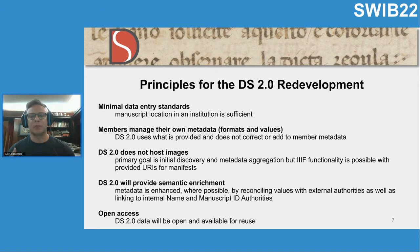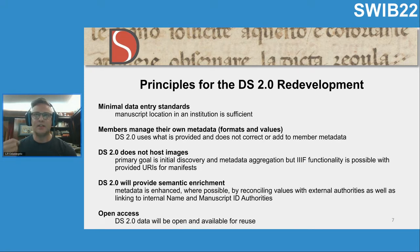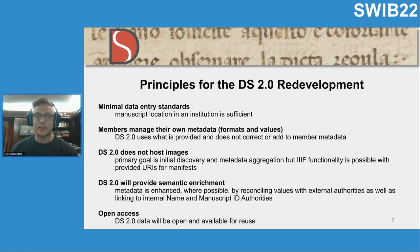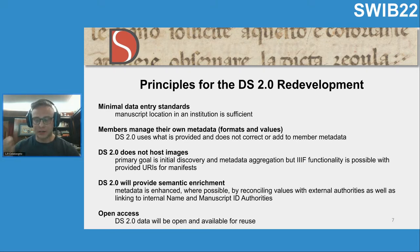As part of the redevelopment, we were guided by certain principles. First, to keep consortium members committed to contributing their data to DS 2.0, we wanted to keep minimal data entry standards to a minimum — all we really need is to know that an institution owns a manuscript and has assigned it some kind of shelf mark or ID. Any additional descriptive metadata is simply gravy. We also wanted to make it clear that members will manage their own metadata, including metadata formats and values. We ingest what records they have and we don't correct or add to it, with one exception.